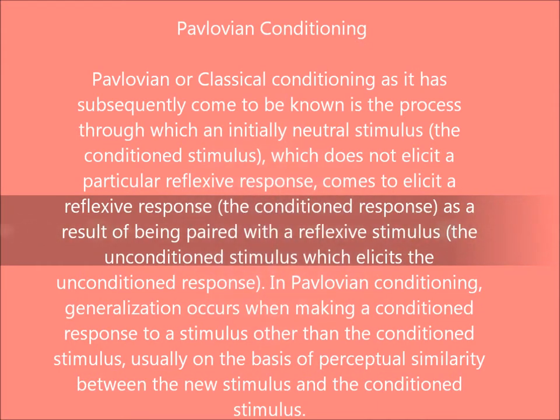Pavlovian or classical conditioning, as it has subsequently come to be known, is the process through which an initially neutral stimulus — the conditioned stimulus — which does not elicit a particular reflexive response, comes to elicit a reflexive response, the conditioned response, as a result of being paired with a reflexive stimulus, the unconditioned stimulus, which elicits the unconditioned response.